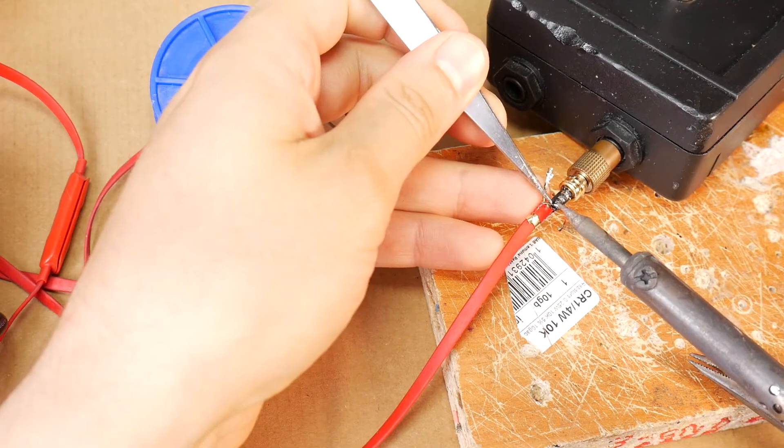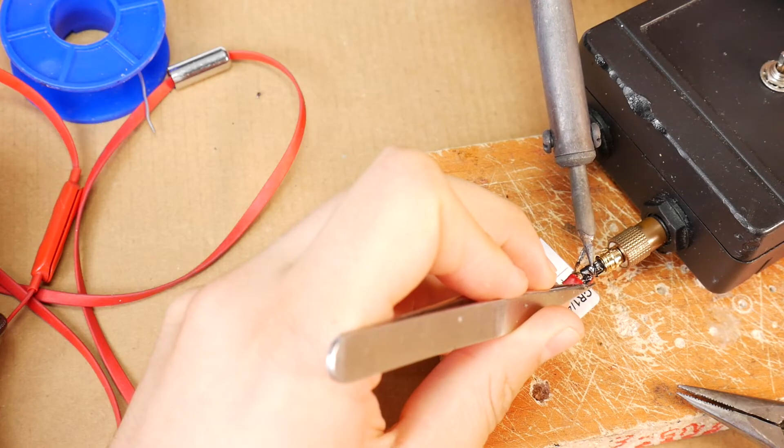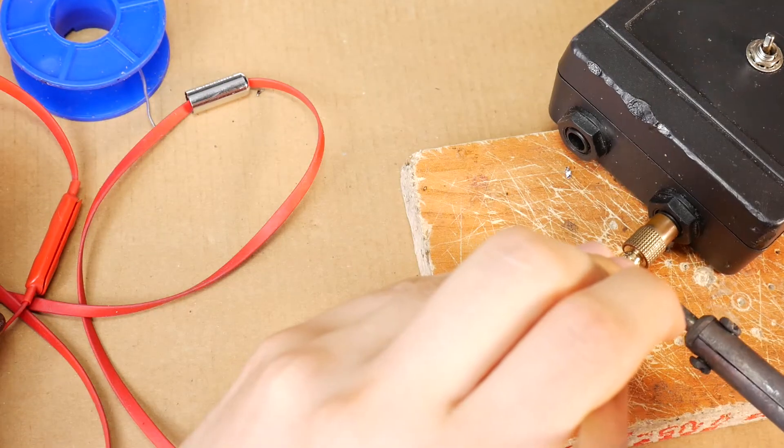Pinch off the excess length and solder the left channel. Then do the same with the right channel wire and solder also the ground wire.